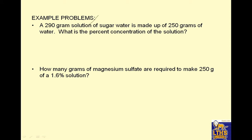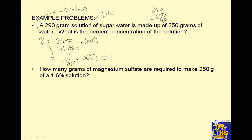A 290 gram solution of sugar water is made up of 250 grams of water. That's the big part, that's my solvent. What's the percent concentration of the solution? Well, percent equals solute over solution times 100%, which is part over total. The solute part is 290 minus 250, which is 40. So this is going to be 40 over 290 times 100%, and I get 13.8%.